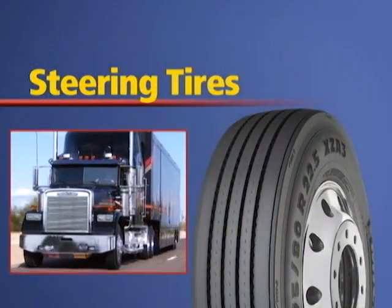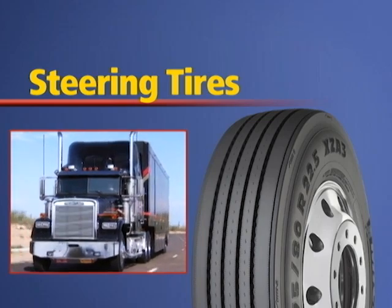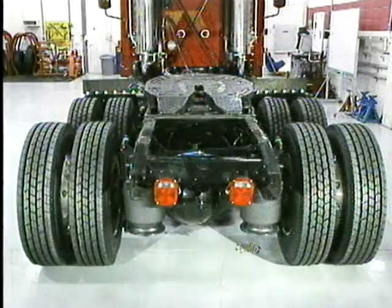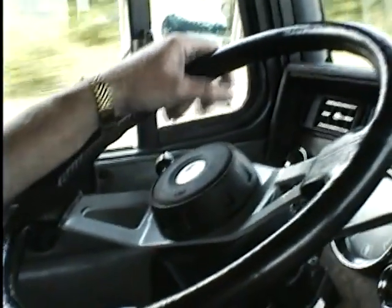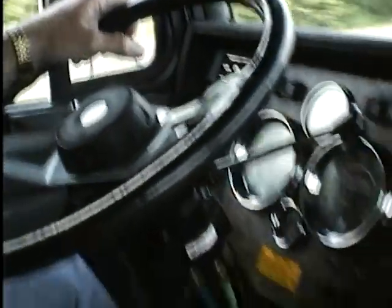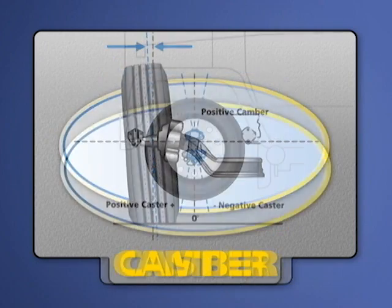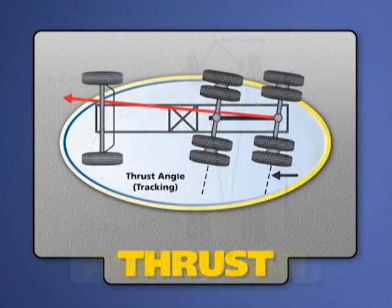Steering tires: this segment of the video will discuss issues related to steering tires. Tire wear due to rubber distortion can be a result of various mechanical influences. One of these influences is vehicle alignment. There are several different alignment factors which will affect tire performance and vehicle handling. These are toe, camber, caster, drive axle parallelism or scrub, thrust, and Ackerman.